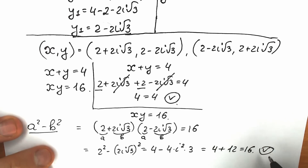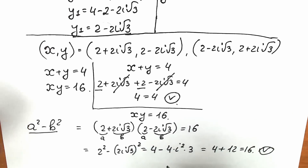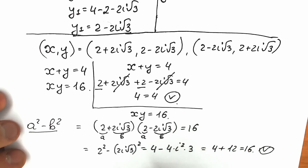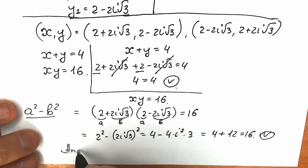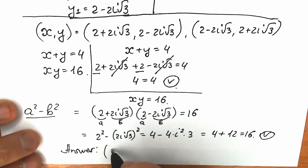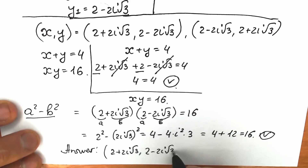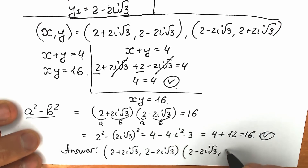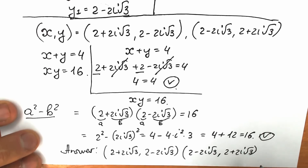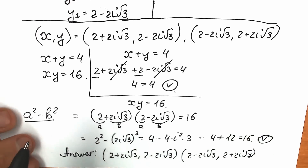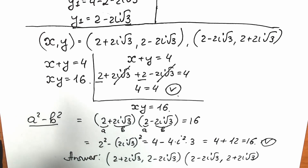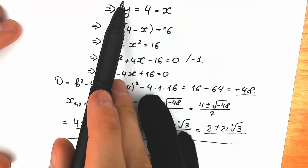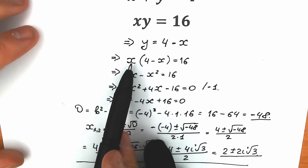So our answer is absolutely correct. In terms of complex numbers, this is our answer. Our final answer has two pairs of solutions: (2 plus 2i√3, 2 minus 2i√3) and (2 minus 2i√3, 2 plus 2i√3). This question is not that hard — we expressed y in terms of x and solved a quadratic equation. The main trick here is the complex solutions.